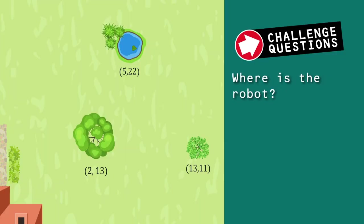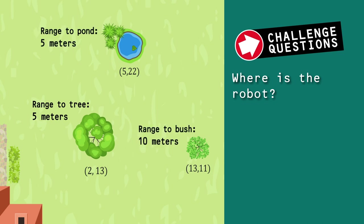Now get your pencils ready for today's challenge questions. This week's challenge question is: if our robot had moved farther along in the yard, and it was now 5 meters from the tree, 10 meters from the bush, and 5 meters from the pond, where is it? Again, the tree is at (2, 13) and the range is 5 meters. The bush is at (13, 11) and the range is 10 meters. Finally, the pond is at (5, 22) and the range is 5 meters. What is the robot's position?